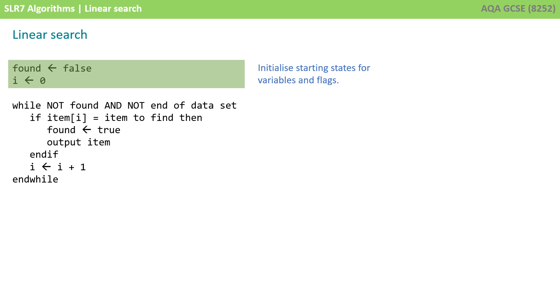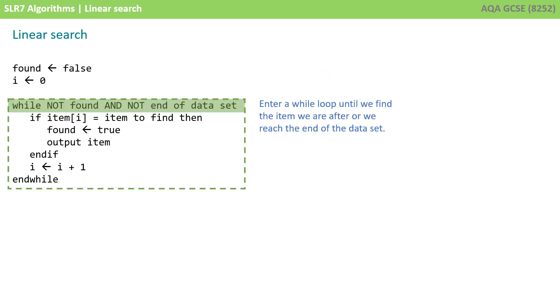So if we apply some algorithmic thinking, we can uncover the algorithm for this particular search. We could have a Boolean variable called found that sets to false initially because we have to find the item in the list. We could then have a variable i, which is the index of the item we're looking for.